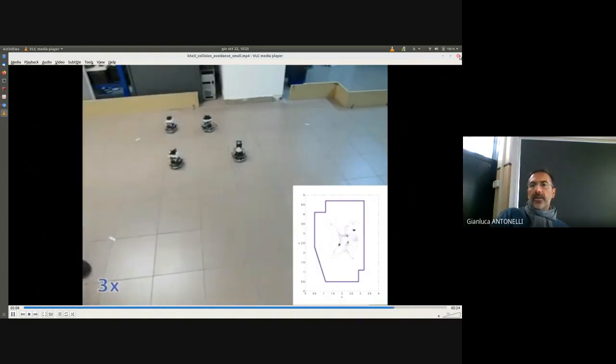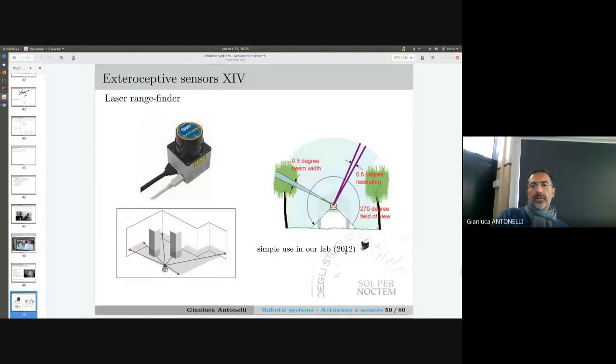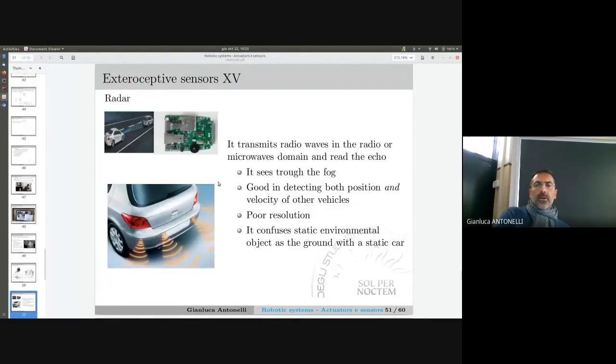Radar transmits radio waves in the domain of microwaves and reads the echo. It's good because it can pass through fog. It has a very poor resolution and can confuse a static environmental object with a static car - the resolution is very bad. But it can detect position and velocity of other vehicles.